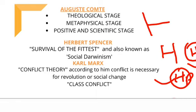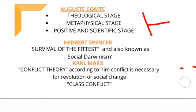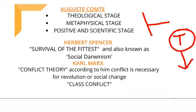Simple tribe sa kya hua hai — modern society tak ka safar dekho. Yeh humara simple tribe tha, lekin evolution hote-hote modern society ban gai. Tribal mein aur modern society mein kitna huge difference hai. Primitive society mein sirf hunting-gathering kama karna tha — yahi survival ka zariya tha.